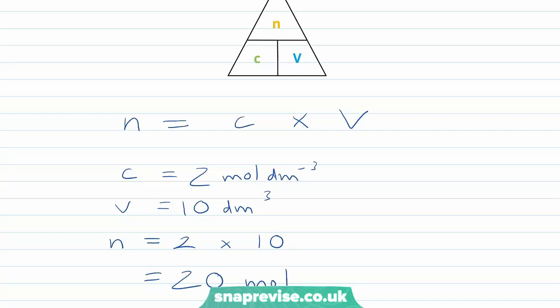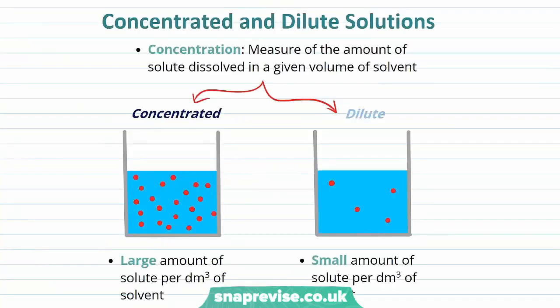So let's have a look at the difference between a concentrated and dilute solution. Concentration is a measure of the amount of solute dissolved in a given volume of solvent. A concentrated solution will contain a large amount of solute per decimetre cubed of solvent. However, a dilute solution is the opposite — there's a small amount of solute per decimetre cubed of solvent.